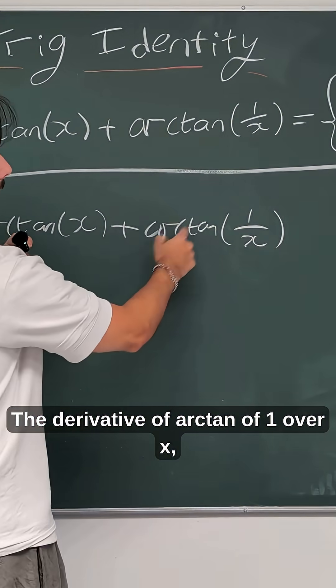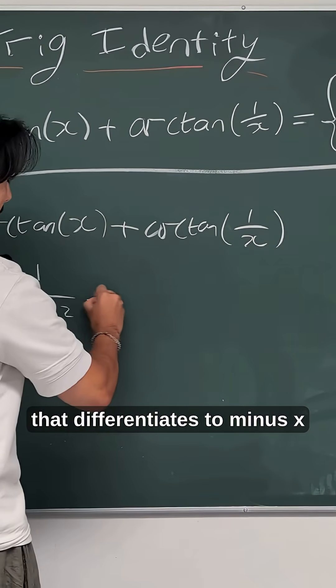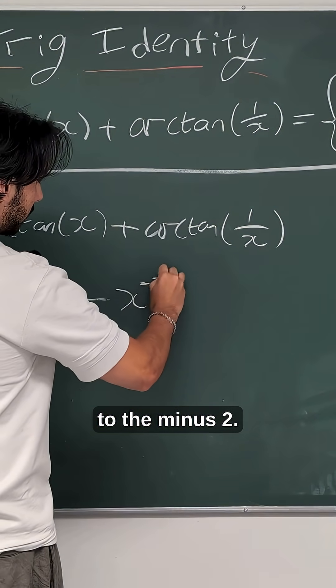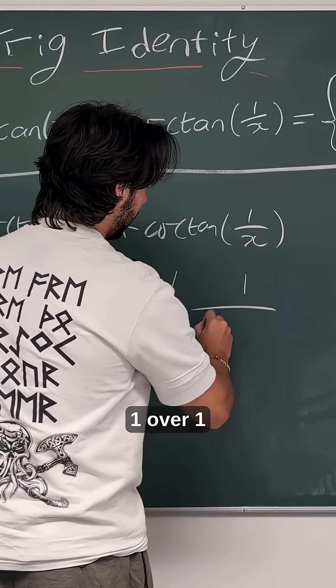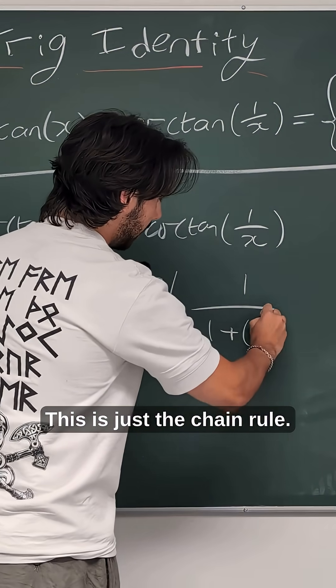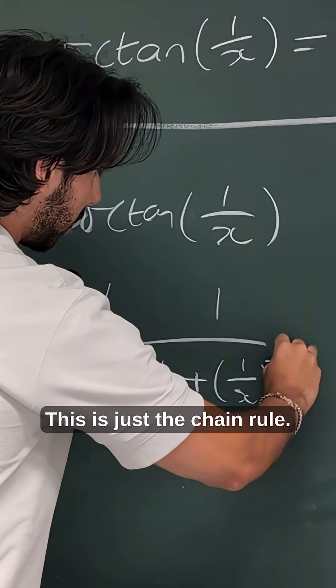The derivative of arctan of 1 over x differentiates to minus x to the minus 2, 1 over 1 plus 1 over x squared. This is just the chain rule.